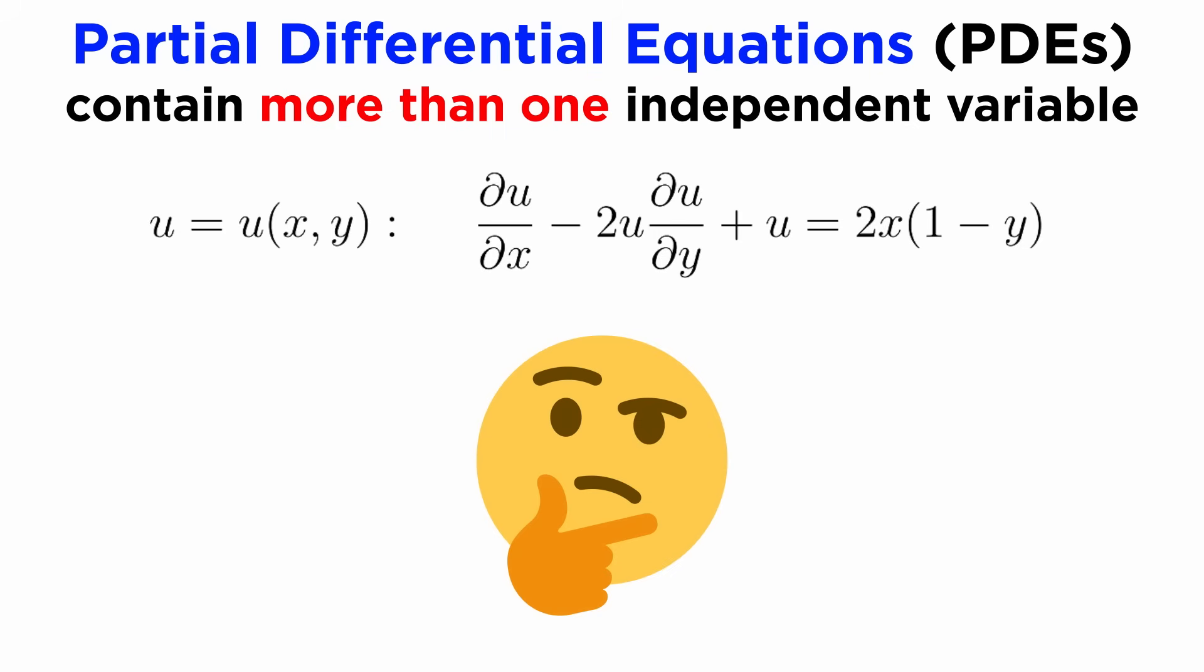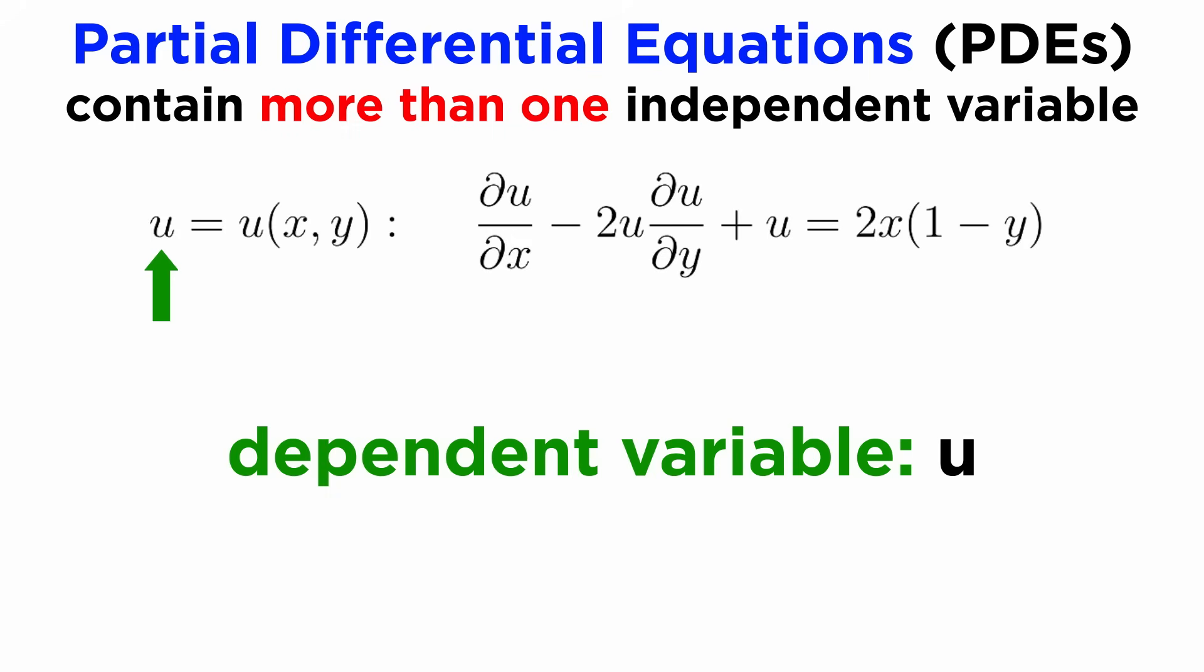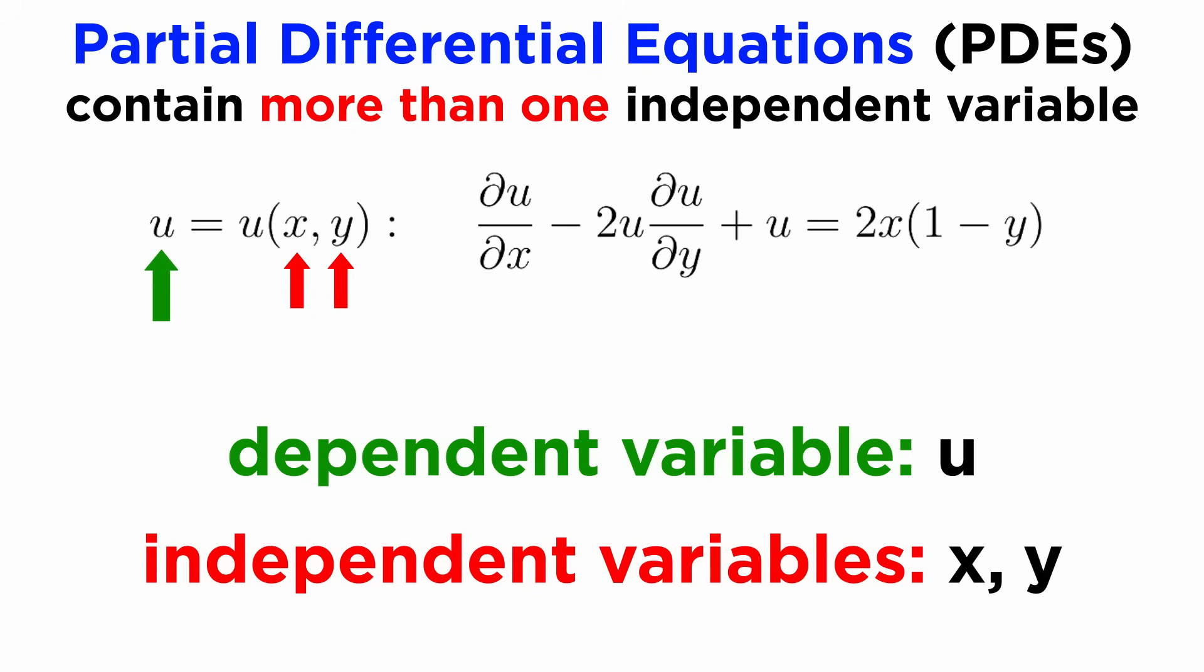Just as we did for ODEs, we'll start with some terminology on types of PDEs that we will encounter in the upcoming tutorials. Most of it should feel very familiar from ODEs. Firstly, a PDE will always have a dependent variable, which we will often now denote with the letter U, and multiple independent variables.